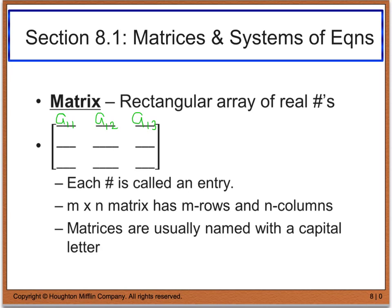Going down to the second row, I have A sub 2,1 for the second row, first column; A sub 2,2 for the second row, second column; and A sub 2,3 for the second row, third column. We repeat this pattern for the third row: third row first column, third row second column, and third row third column.